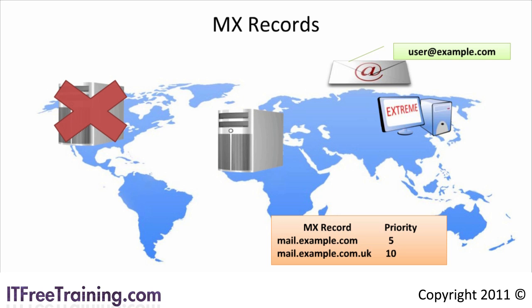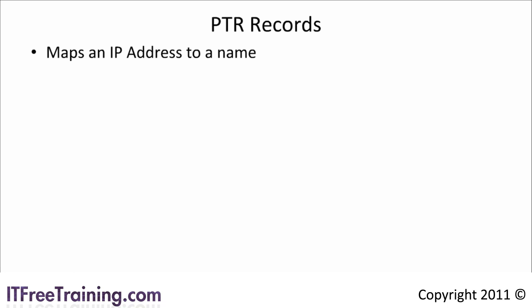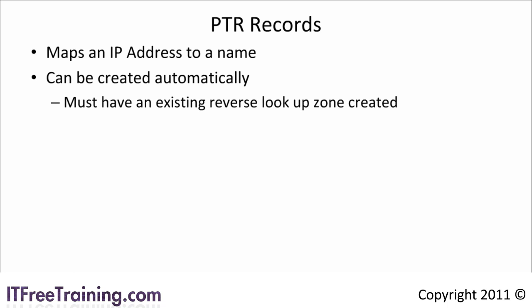The last record I will look at is the PTR record. PTR stands for pointer record and simply maps an IP address to a name. Windows can create PTR records automatically, but in order for this to happen you must have a reverse lookup zone created to store the PTR record. In a moment I will show you how to create a reverse lookup zone.